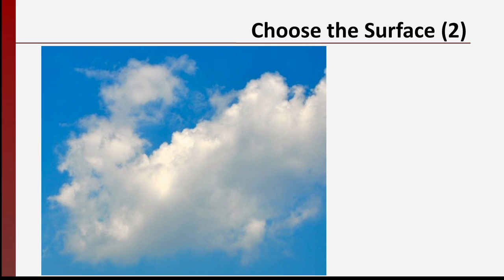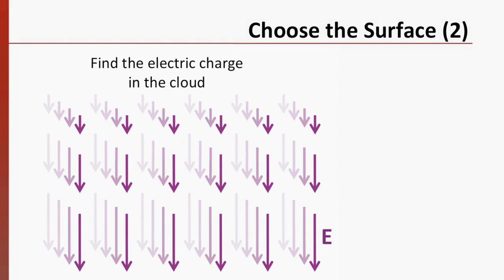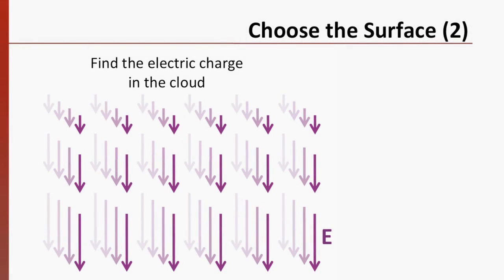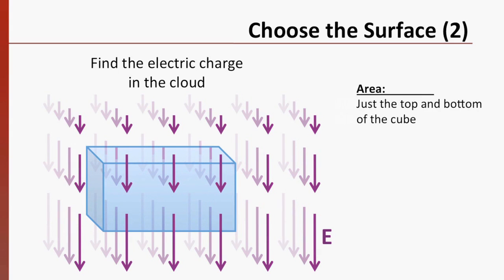Here's challenge number two. We would like to know the electric charge contained in a thundercloud. Let's say that the inside of the cloud has an electric field that looks like this. What surface would you choose? A box-shaped surface will take advantage of the Cartesian symmetry in this electric field. Because of the alignment between the sides of the box and the electric field, they will not contribute to the flux integral. We can use the area of the top and bottom of the box, and the electric field at those locations to find the flux. This is a common technique.